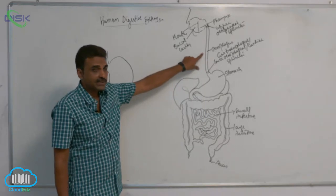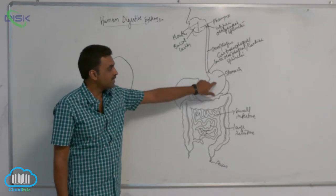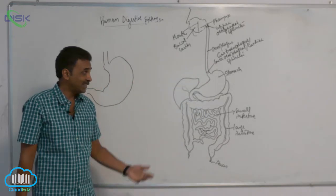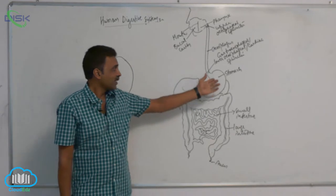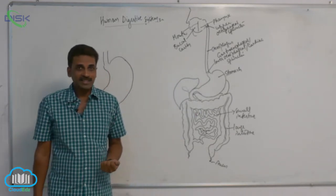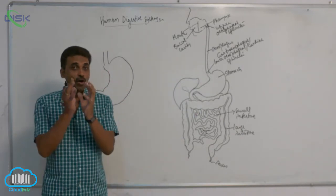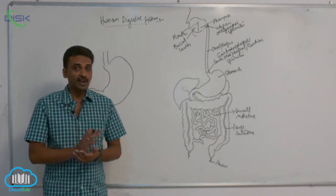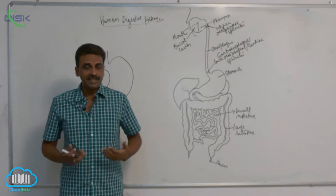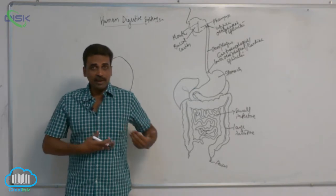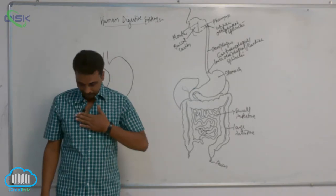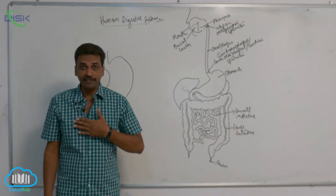The esophagus opens into the stomach. The stomach is a hollow muscular organ present in the upper left part of the abdomen, beneath the diaphragm.